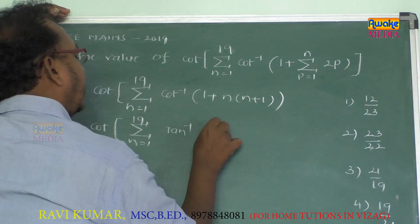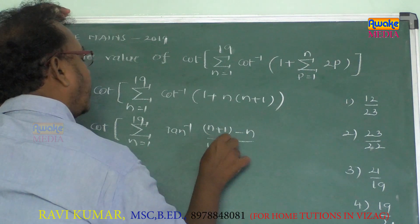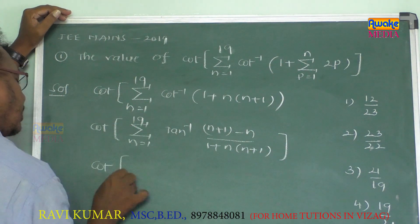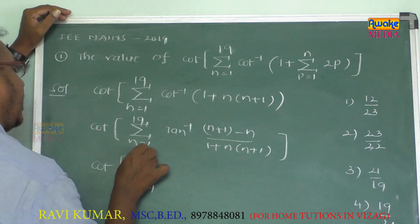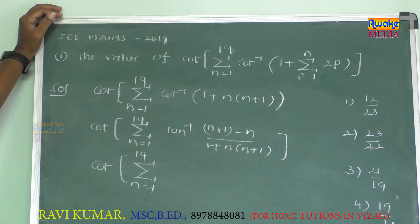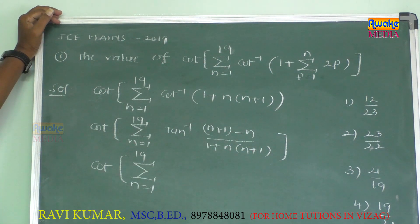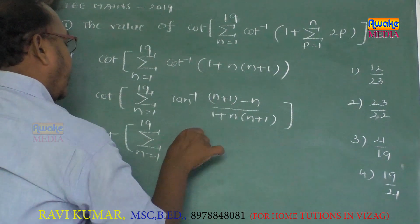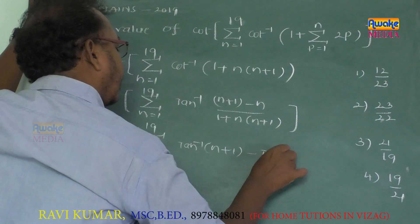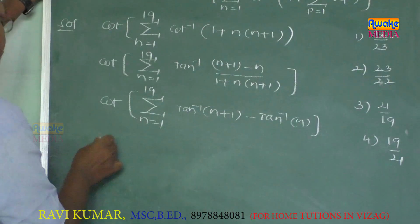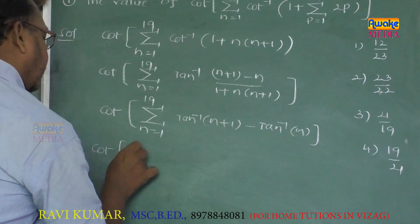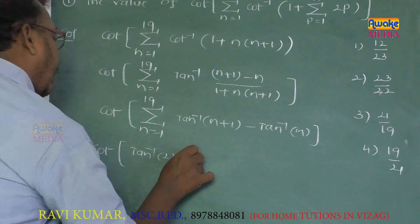We get cot of sigma n equals 1 to 19, tan inverse of (n+1 - n) divided by (1 + n(n+1)). Here n+1 is considered x and n is considered y, so we can write this as tan inverse x minus y divided by 1 plus xy, which is in the form tan⁻¹x minus tan⁻¹y. So we write tan⁻¹(n+1) minus tan⁻¹(n).